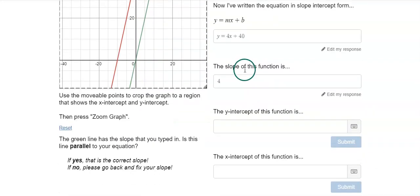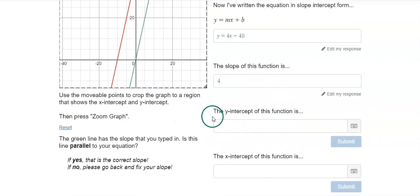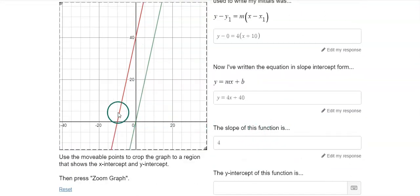Once I write down the slope, the next two questions that pop up are the Y intercept of the function and the X intercept of the function. Well, now I can look at my graph for the red line, and I see that my graph crosses the Y axis at 40. So my Y intercept is 40.